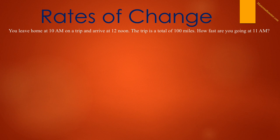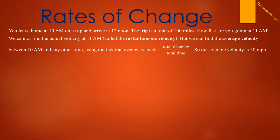Let's look at an analogy. Suppose you leave home at 10 am on a driving trip and you arrive at your destination at 12 noon. The trip is a total of 100 miles. I want to know how fast you are going at 11 am. We have absolutely no clue what our actual velocity is at 11 am — this is called the instantaneous velocity. We can find the average velocity between 10 am and any other time because the average velocity equals the total distance over the total time. So for our trip, our average velocity is 50 miles an hour. But how fast we are going at 11 am is open to question. We could be traveling at 60 miles an hour. We could also be stopped. We have no idea.